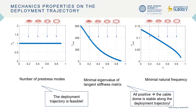We need to make sure the deployment trajectory is feasible and stable. The number of pre-stress modes shows that there is always one pre-stress mode. The minimum eigenvalue of the tangent stiffness matrix and natural frequency are all positive, meaning the cable dome is stable along the deployment trajectory.